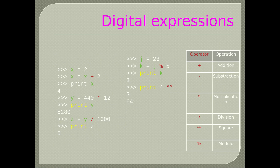Here are some examples. Type x = 2, hit enter, then type x = x + 2 and hit enter, then print x — you will get 4. Type y = 440 * 12, hit enter and type print y — the result is 5280. Type z = y / 1000, print z, hit enter — the result is 5. Type j = 23, k = j % 5 (modulo 5), print k — the result is 3.